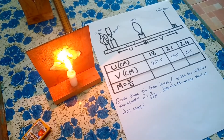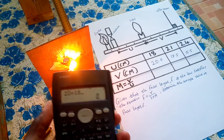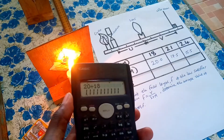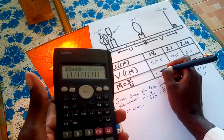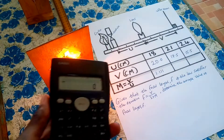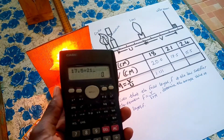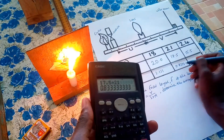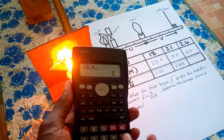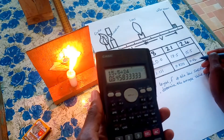Let's start with the magnification. We have 20 divided by 18, which is 1.111 recurring — at least 4 significant figures. Then we have 17.5 divided by 21, which is 0.8333 recurring. And 15.5 divided by 24, which is 0.6458.